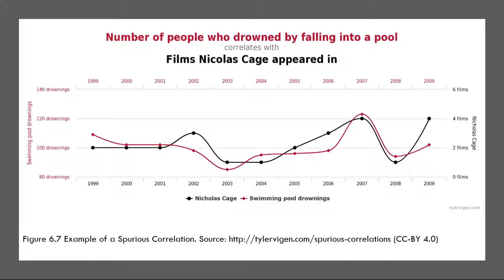The second reason that correlation doesn't imply causation is called the third variable problem. Two variables, X and Y, can be statistically related not because X causes Y or Y causes X, but because some third variable Z causes both Y and X. For example, the fact that nations with more Nobel Prizes tend to have higher chocolate consumption probably reflects geography — European countries tend to have higher rates of per capita chocolate consumption and invest more in education and technology per capita than many other countries. Similarly, the statistical relationship between exercise and happiness could reflect a third variable such as physical health, which could cause both exercise and happiness. Correlations that result from a third variable are often referred to as spurious correlations.